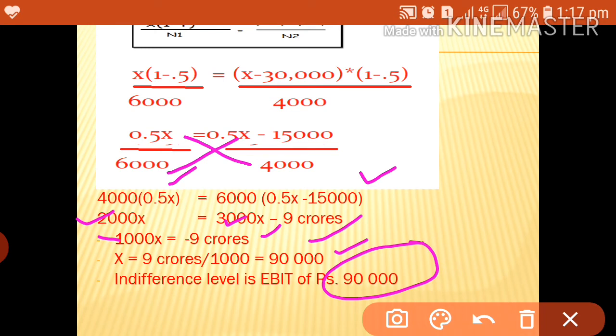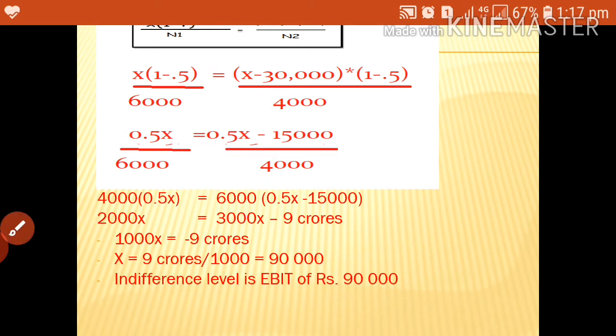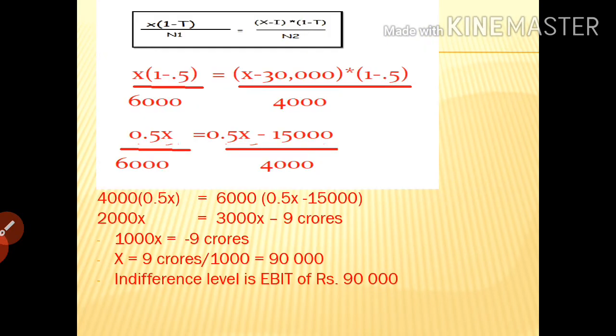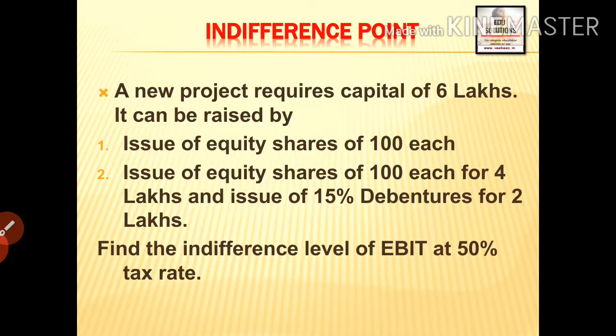So x equals 90,000. This means 90,000 is the indifference level of EBIT. At EBIT of 90,000, the EPS will be the same under both financial plans.